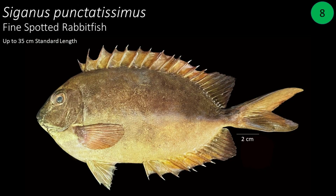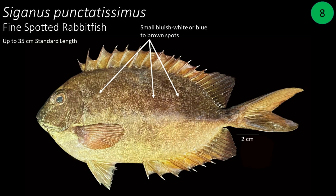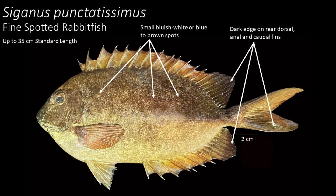Number 8: Siganus punctatissimus, also called fine-spotted rabbitfish. It can reach up to 35 centimeters in standard length. The body is dark purplish brown with numerous small bluish white or blue to brown spots. Dark edging is on the rear of the dorsal fin and in the anal and caudal fins, and it has a deeply forked caudal fin.